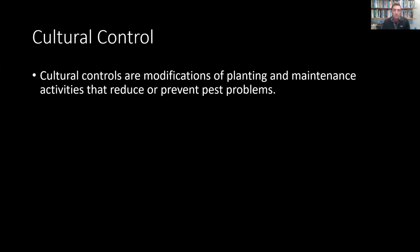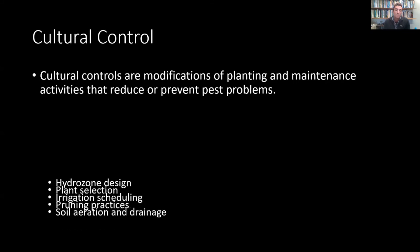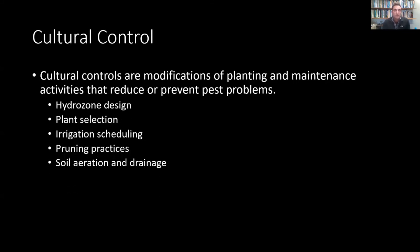Cultural control involves modifications of planting and maintenance activities that reduce or prevent pest problems. This includes how you design irrigation and plantings, selecting proper plants, irrigating properly, implementing pruning practices tailored toward pest reduction, and potentially soil aeration, increasing drainage, and relieving compaction — all to help create healthy plants that can fight off pests on their own.